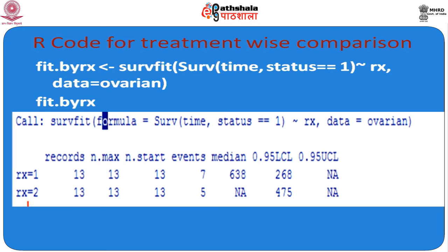It is to be noted that the log-rank test is a hypothesis test to compare the survival distributions of two samples. It is a non-parametric test, appropriate to use when the data are right-skewed and censored. It is widely used in clinical trials to establish the efficacy of a new treatment in comparison to a control arm. When the measurement is time-to-event, the log-rank test is suitable. This test is also called the Mantel-Cox test, named after Nathan Mantel and David Cox.